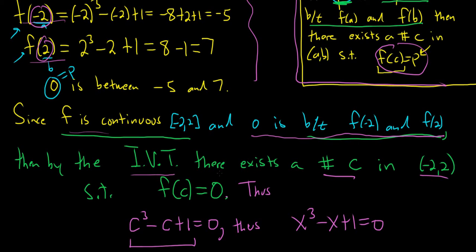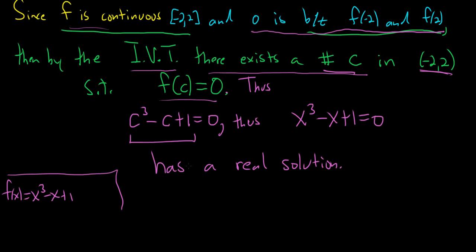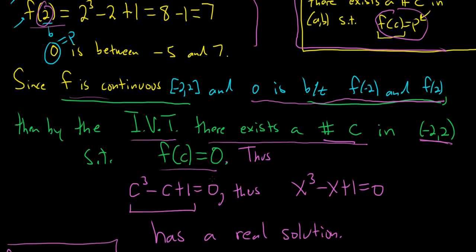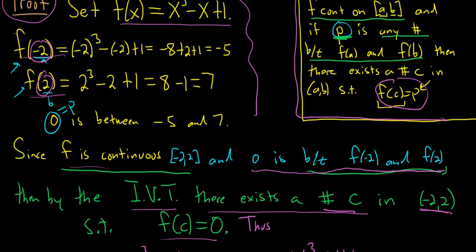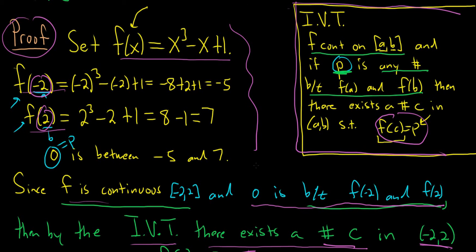Then say, by the Intermediate Value Theorem, we've shown there exists a number c such that f of c is 0. And then just plug it into your function and that gives you what you want. It's worth emphasizing that it's important to be really solid in these problems. You want to explain everything as best as you can. I hope this video has been helpful. Good luck.